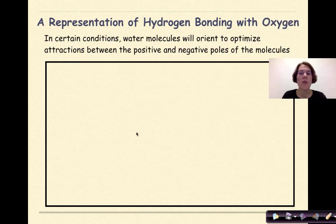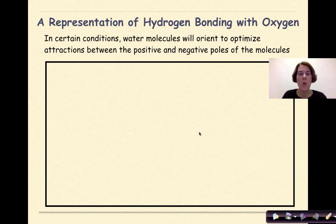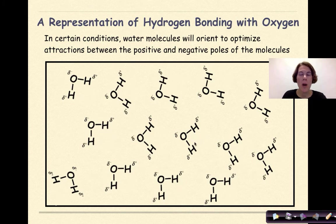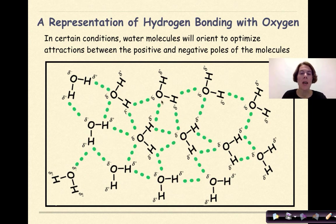Now let's look at a representation of hydrogen bonding with oxygen. In certain conditions, water molecules will orient to optimize attractions between positive and negative poles of molecules. Here are my water molecules where the oxygen is slightly negative and hydrogens are slightly positive. If we add in the hydrogen bonding, we can see that the slightly negative end of the oxygen is attracted to the slightly positive end of the hydrogen. The water molecules are oriented in order to optimize these opposite attractions.